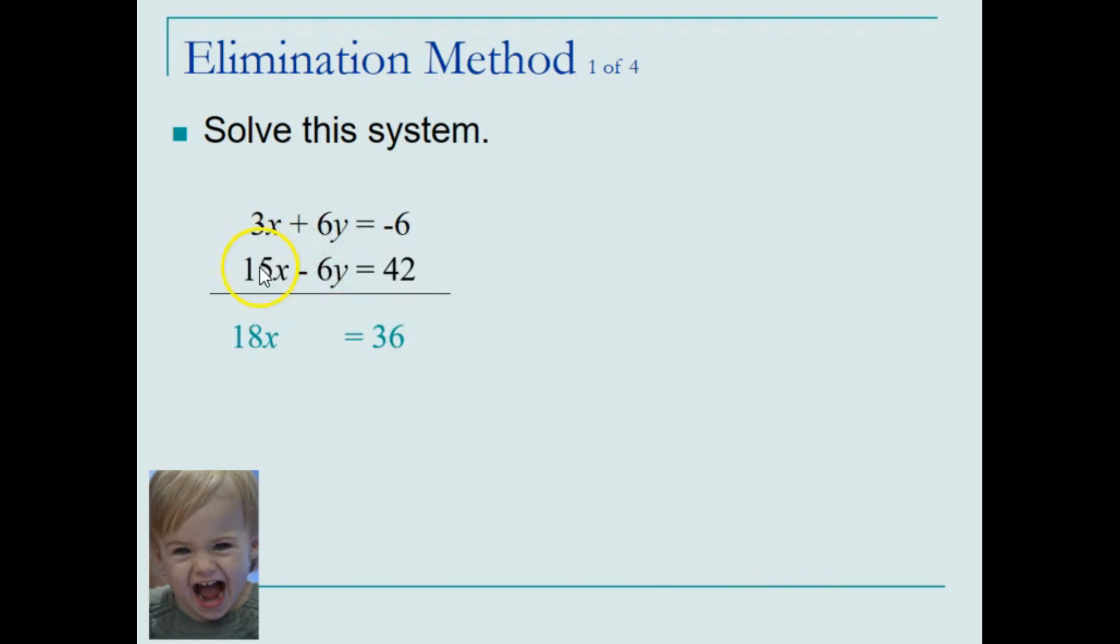Combining like terms, 3 and 15x add up to be 18x. As desired, the result is no y's, they have canceled out, and negative 6 plus 42 combined to equal 36. We now have an equation with one variable that is possible for us to solve. The only thing left to undo on the variable is to divide both sides by 18, resulting in x equal 2.